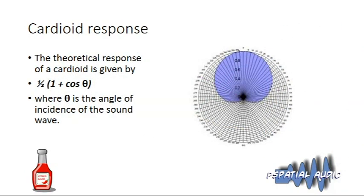Another way to understand this: the cardioid response is defined by (1 + cos θ)/2 — the 1 being an omnidirectional response and the cos θ being a figure-of-eight response. So you can think of a cardioid microphone as the sum of a figure-of-eight microphone with a mono omnidirectional microphone. Two cross cardioids means two crossed figure-of-eights summed with two coincident mono microphones.